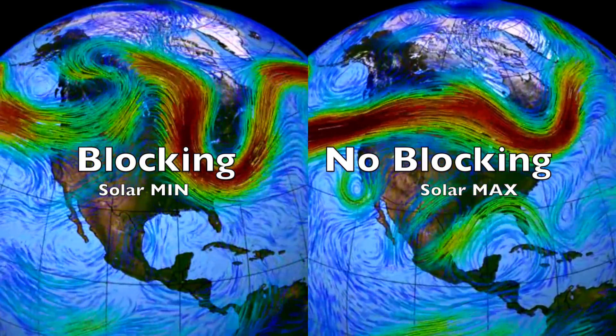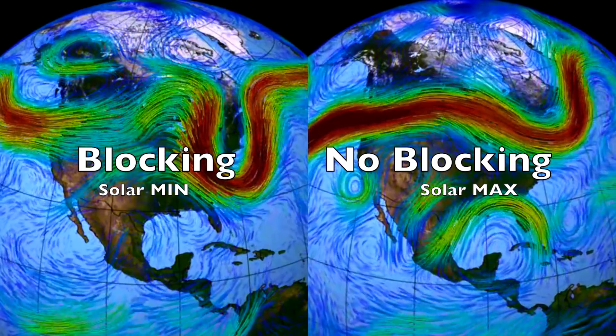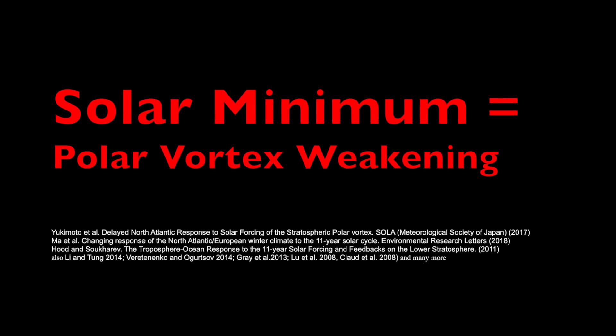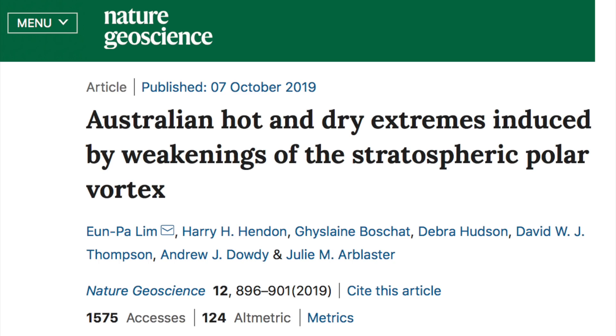Solar minimum also brings more polar vortex weakening events, while solar maximum brings far fewer. For most parts of the world, the weaker the vortex, the worse the winter cold will be. One of the major exceptions is Australia, which tends to see hotter and drier conditions due to where the southern vortex tends to kink.